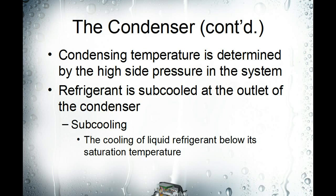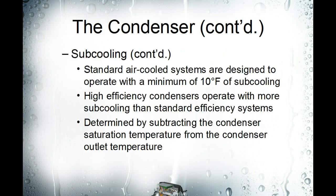Sub cooling occurs near the outlet of the condenser. Sub cooling is where we take the refrigerant that has been condensed from high temperature and pressure vapor down to high pressure liquid. Sub cooling ensures that we have completely released all of the sensible and latent heat and that we don't have any of the refrigerant boiling off before it hits the metering device.